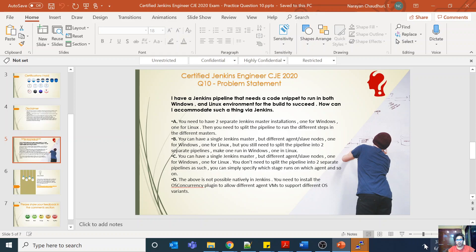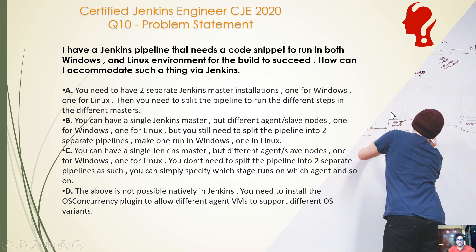Hi everyone, welcome back to the CJE 2020 certification catalyst series. This is question 10. I have a Jenkins pipeline which needs the code snippet to run in both Windows and Linux environments for the build to succeed. How can you accomplish such a thing in Jenkins?